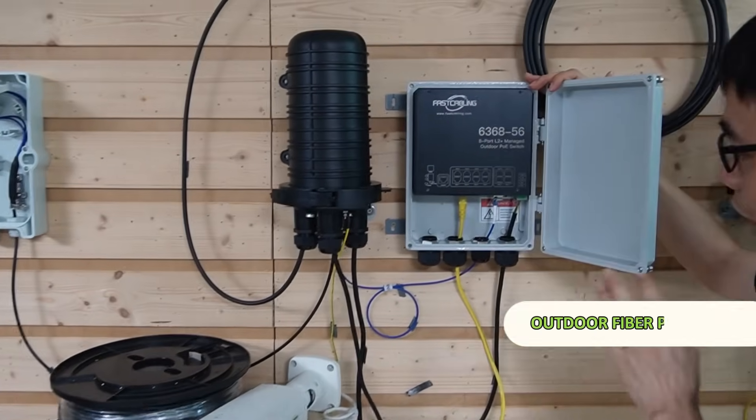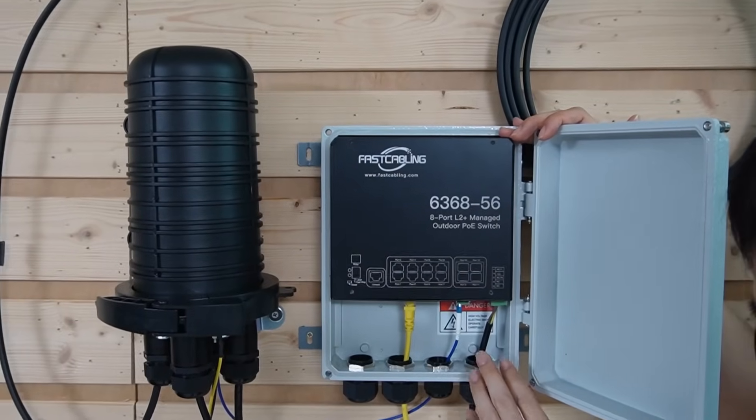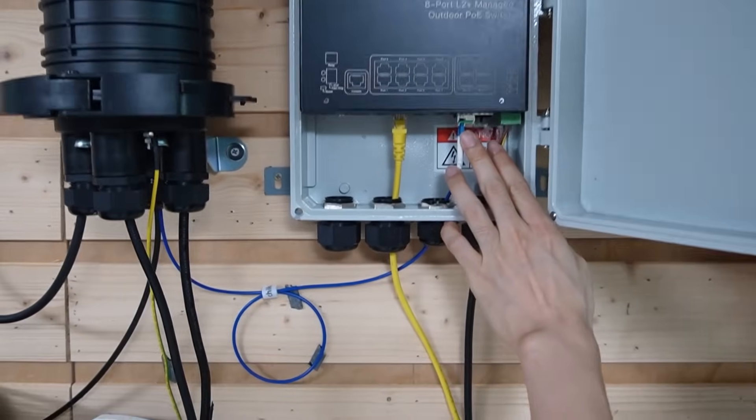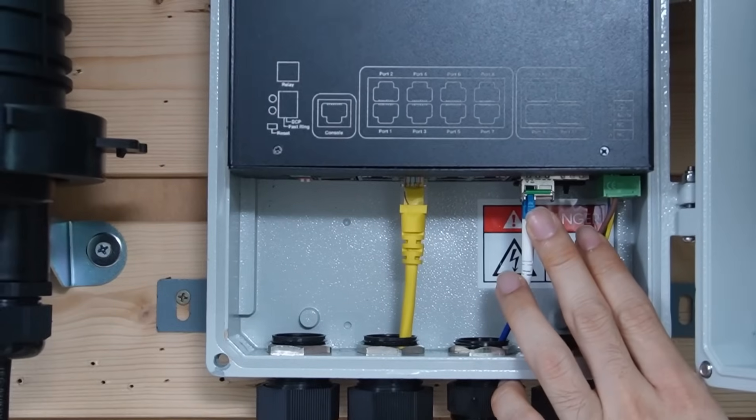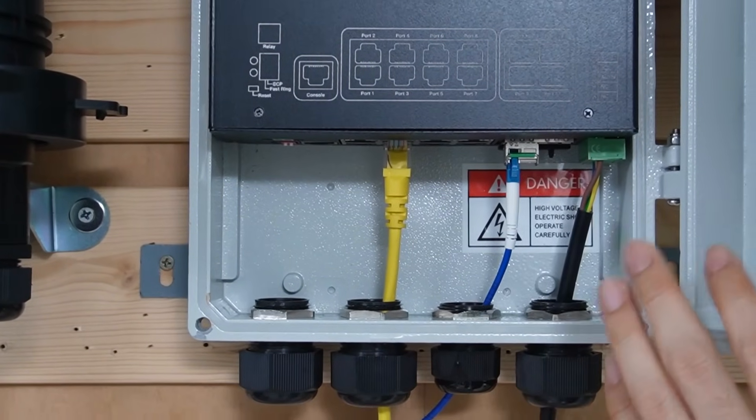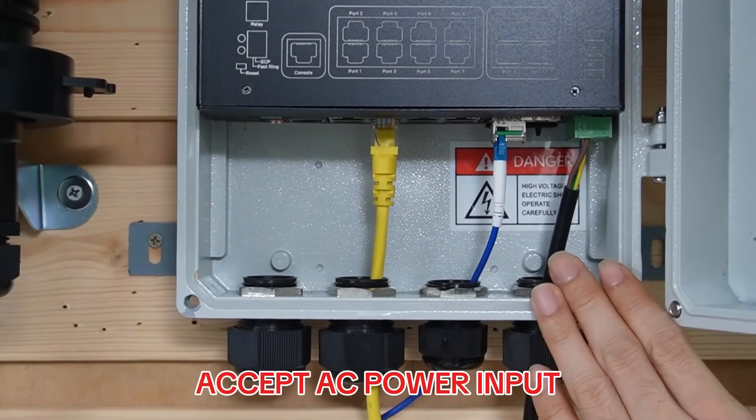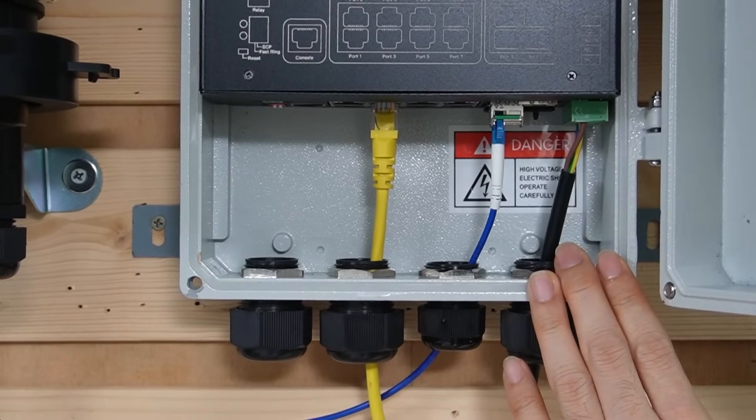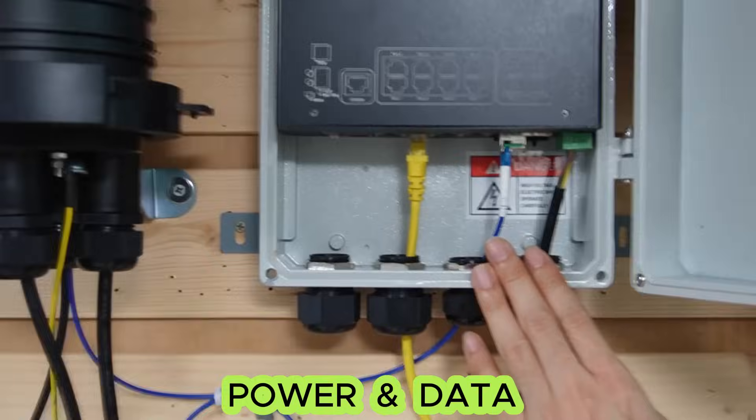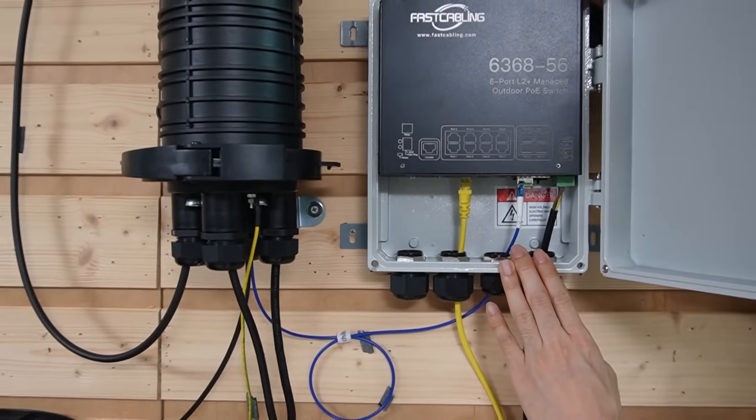This is the outdoor PoE switch. The fiber optic strand connects to an SFP transceiver in one of these SFP slots. This outdoor PoE switch accepts AC power input and can connect to PoE IP cameras, providing power and data exchange to nearby cameras.